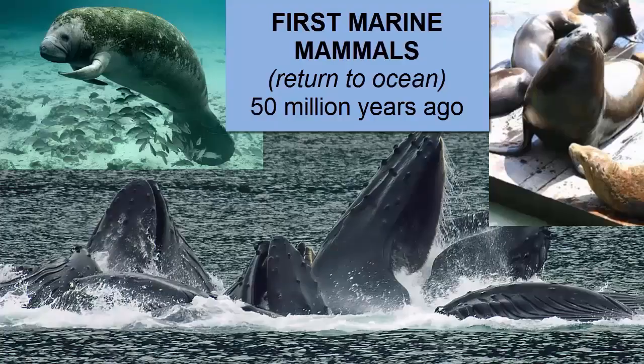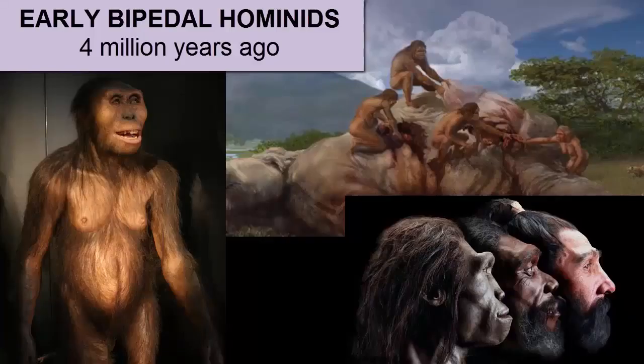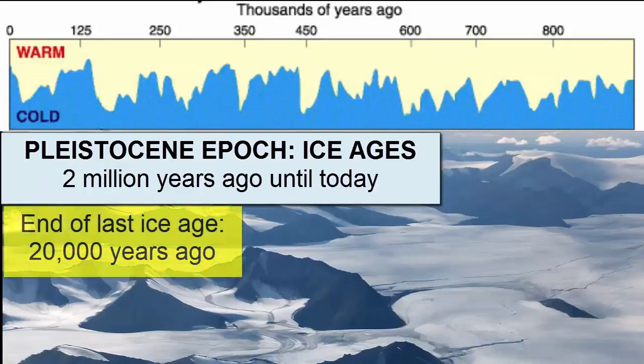Early mammals co-existed with the dinosaurs, but after the dinosaurs went extinct 65 million years ago, mammals continued to evolve to fill the now-empty niches left behind by the dinosaurs. 50 million years ago, some land mammals returned to the ocean, evolving into whales, sea lions, seals, and other marine mammals. The earliest monkeys and apes evolved 40 million years ago, and the oldest evidence we have of early bipedal hominids is 4 million years ago. 2 million years ago, we began the period of cyclic ice ages that we are coming out of today. The last ice age ended only 20,000 years ago.